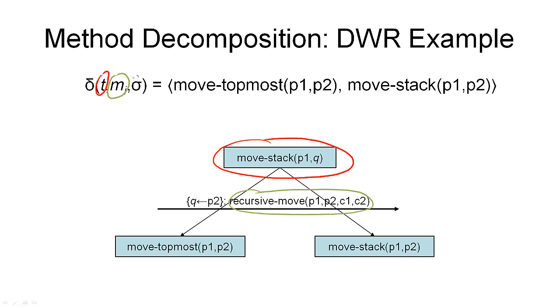And the final component, the substitution sigma, tells us how we have to replace the variables. We have to replace the variable Q with the value P2. Then the children that we have of the node that represents the task that we're trying to decompose are exactly those subtasks that we find in the method. So here it is the first subtask move-topmost and the second one to move-stack. The arrow here that underlines the substitution and the method simply gives us the order in which we have to execute the subtasks.